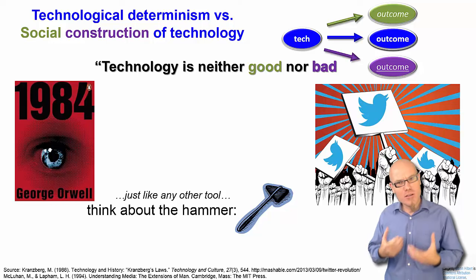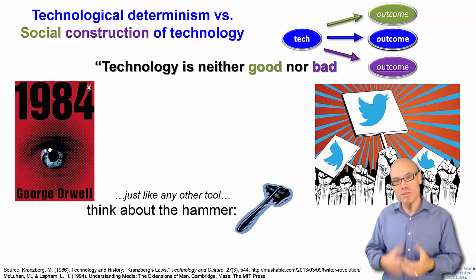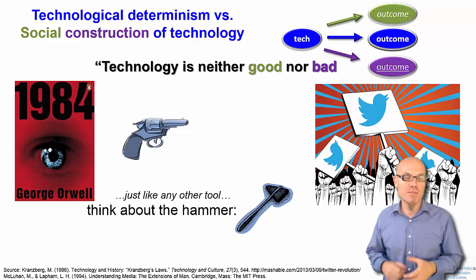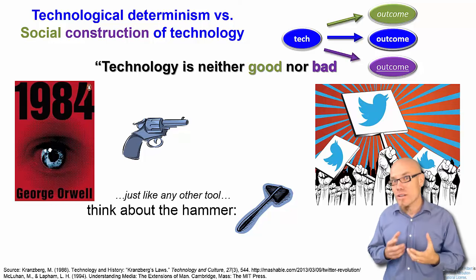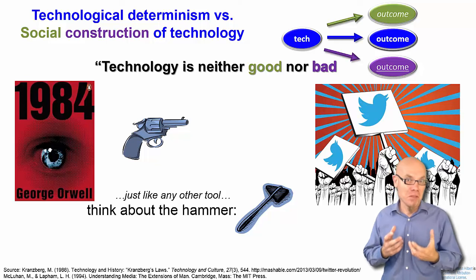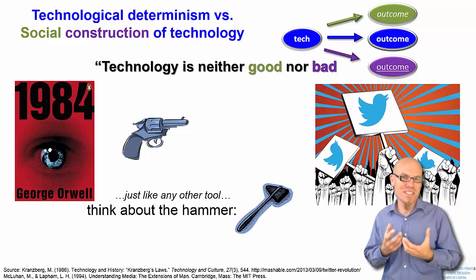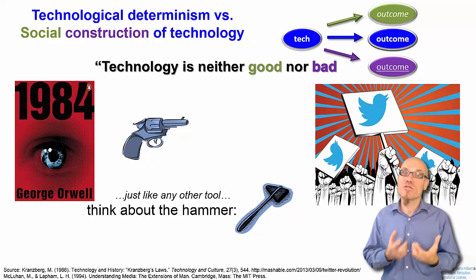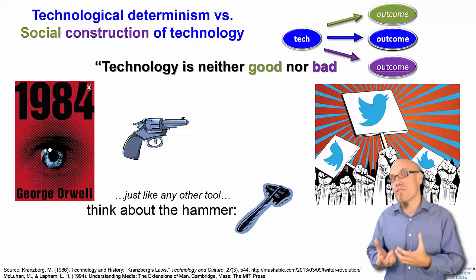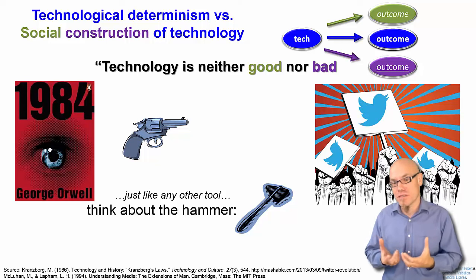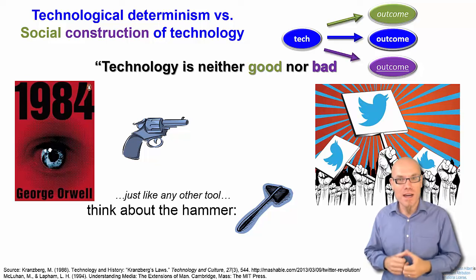There are many discussions like this going on with regard to technology. For example, some people say that guns don't kill people — people kill people. So it's a social choice, the choice of an individual to use guns for one purpose or another, for example, for hunting.